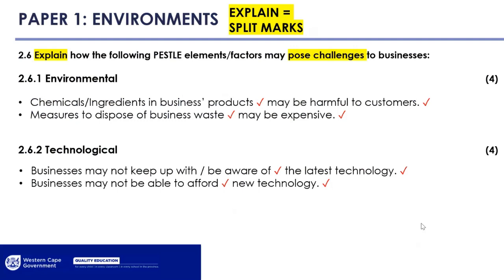For PESTLE: political, economic, social (which includes demographic and cultural), technological, legal, environmental (which includes physical and international). These are factors that may pose challenges to businesses — a problematic situation that makes it difficult for business to operate. For environmental: the business might use chemicals or ingredients harmful to customers, or measures to dispose of business waste may be expensive. For technological: it's a fast-changing environment, keeping up with the latest technology is a challenge, and new technology is expensive. Staff might also struggle to operate new technology.